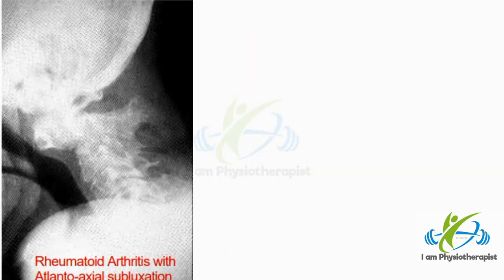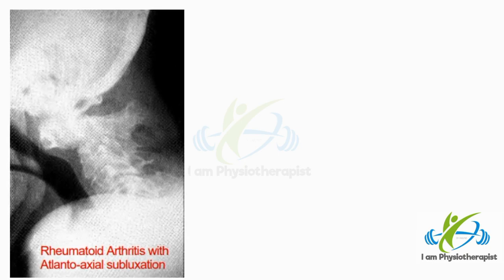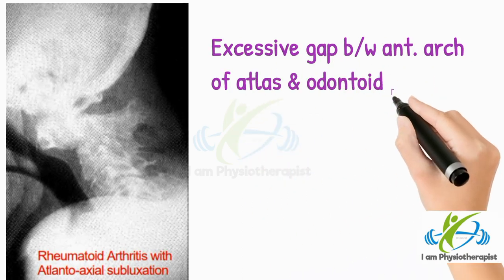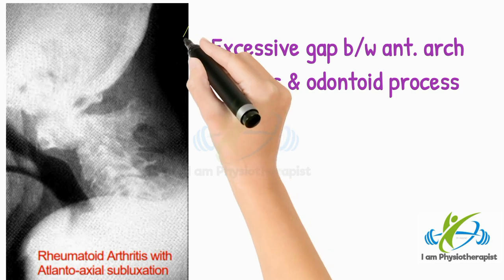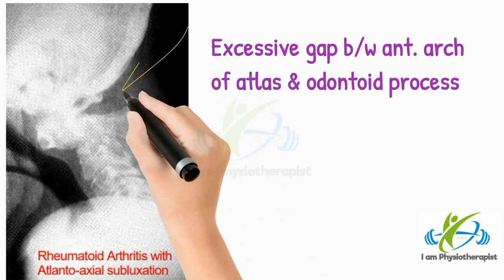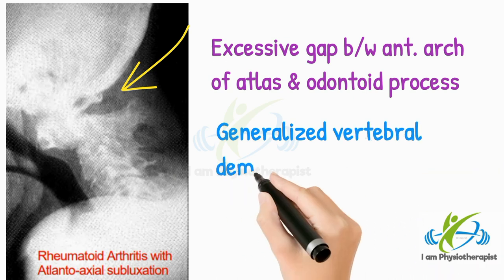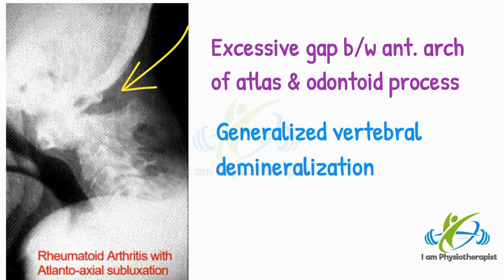This radiograph is taken in flexion. It shows excessive gap between the anterior arch of the atlas and the odontoid process. There is generalized vertebral demineralization. Diagnosis is rheumatoid arthritis with atlantoaxial subluxation.